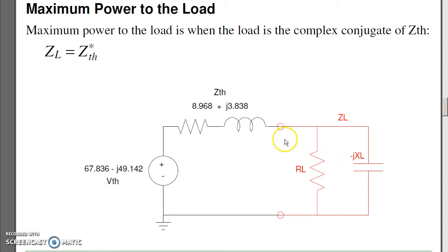If this is the complex conjugate, minus j 3.8 ohms, the complex part cancels. By canceling the complex part, the impedance drops and you get more current. More current produces more power. So for AC, the load is the complex conjugate of the Thevenin impedance.